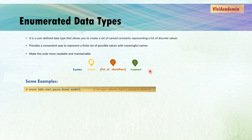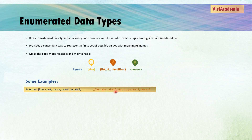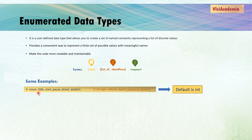In the first example, no data type is defined, so it will automatically start from zero and increment: idle is a label for zero, start for one, pause for two, and done for three. By default, if no data type is mentioned, it takes int as the default data type.